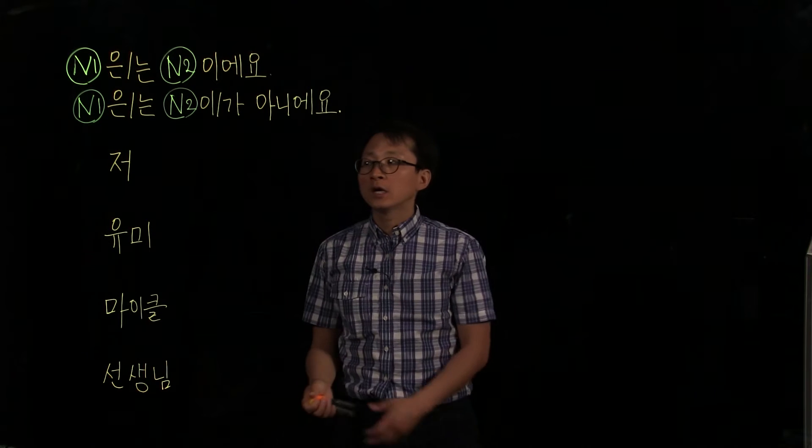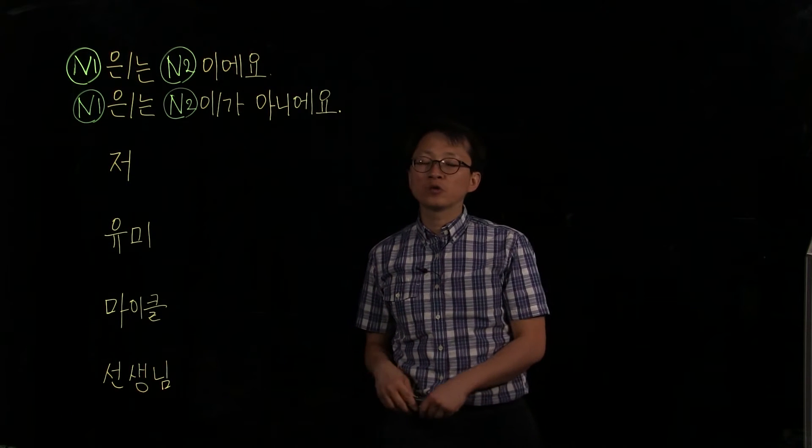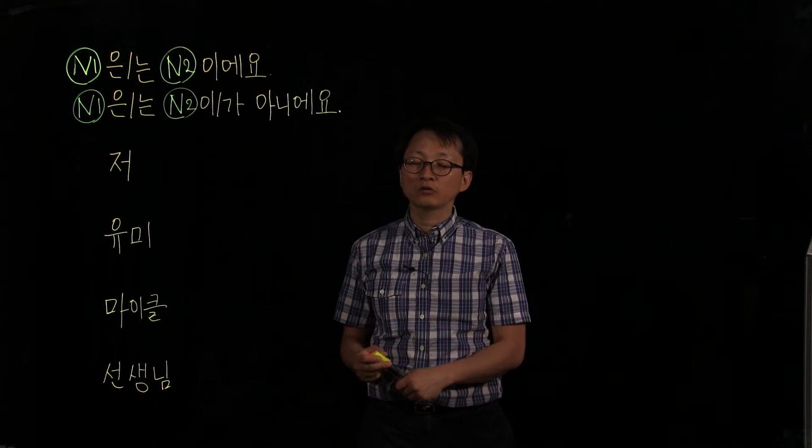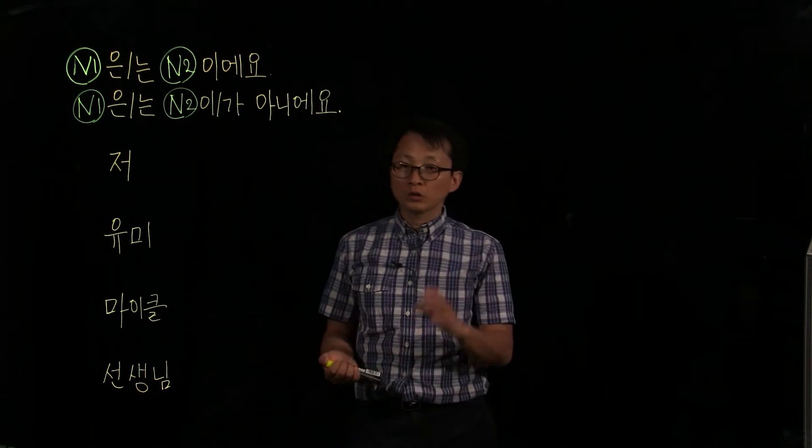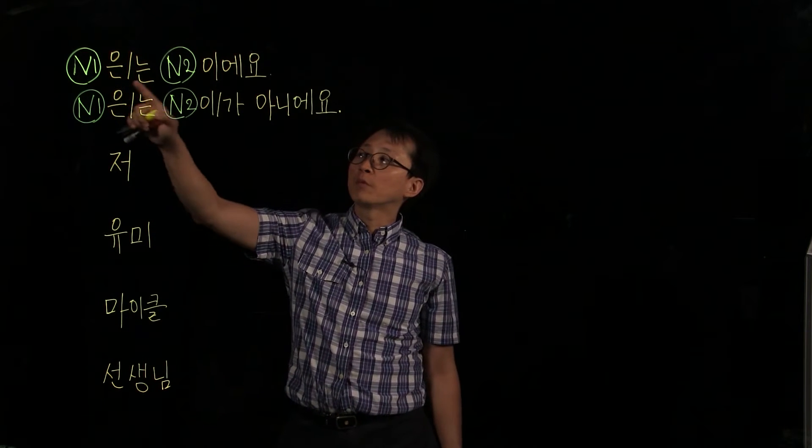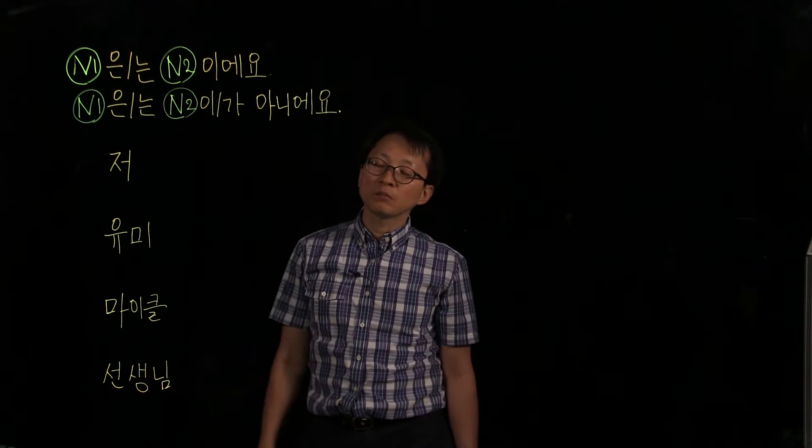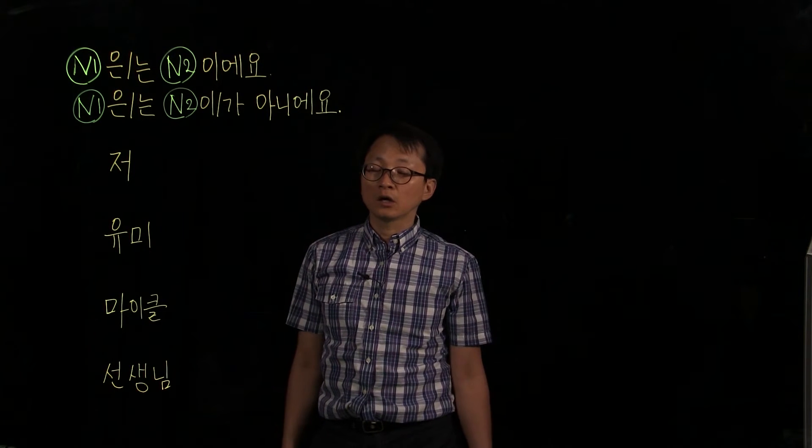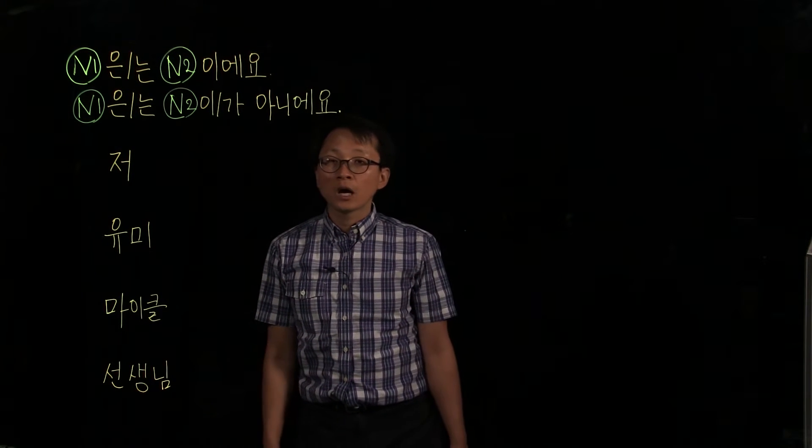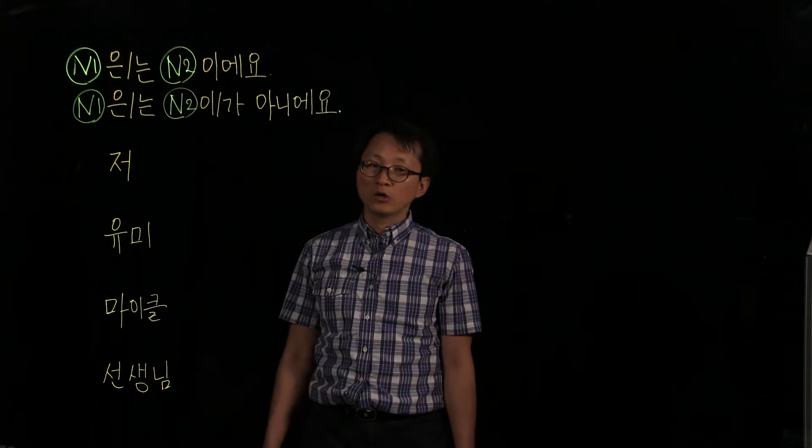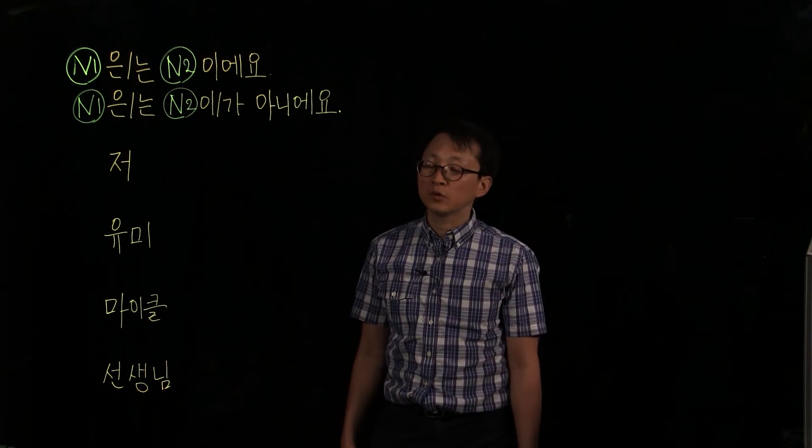And if you want to say your friend Michael is a college student, how do you say that? So you want to talk about Michael, and you need one of them. Michael은, right? Michael은, and he's a college student. What's the word? 대학생. 대학생이에요. Michael은 대학생이에요, or something like that.